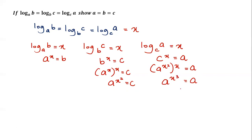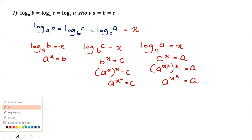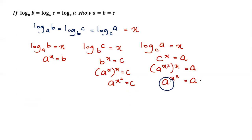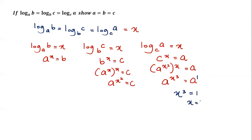Now we can solve! Both sides have the same base a. Since a^(x³) = a^1, the powers must be equal: x³ = 1, and therefore x = 1.